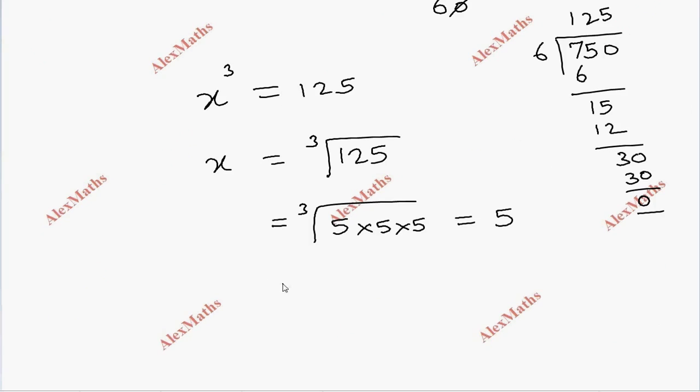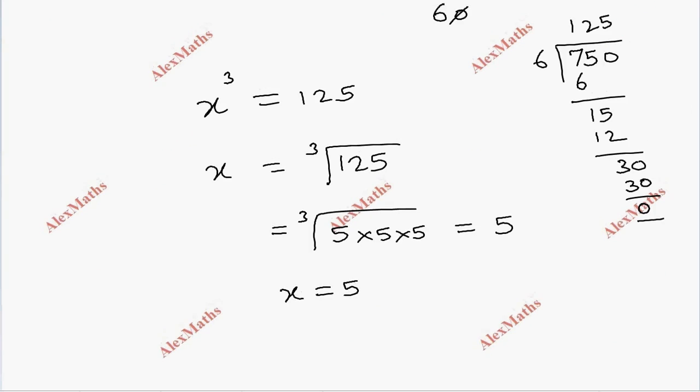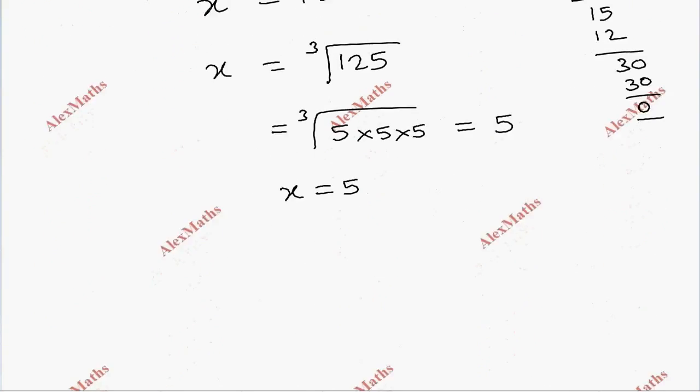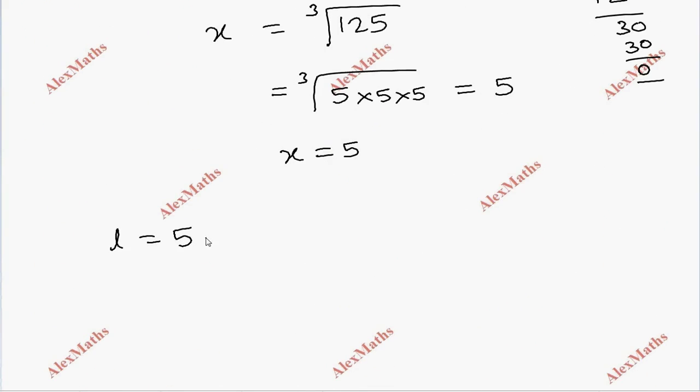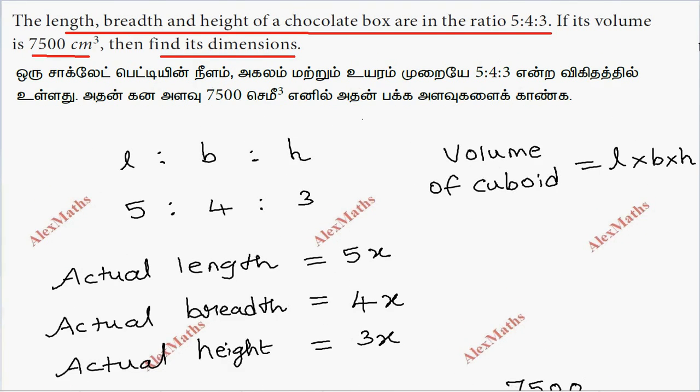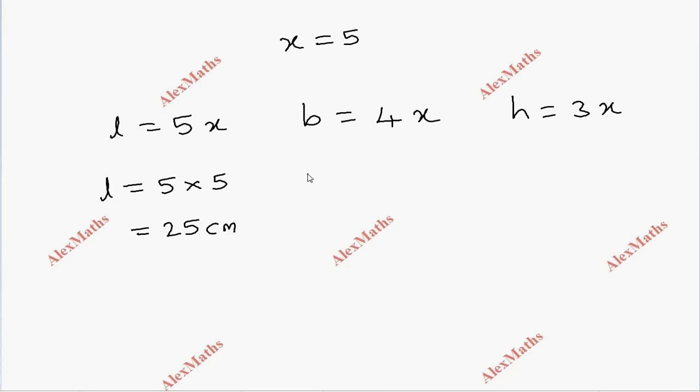So x equals 5. The actual length is 5x, which is 25. The volume is in centimeters, so B is 4 into 5, which is 20 centimeters.